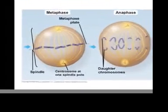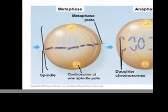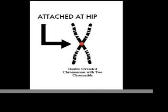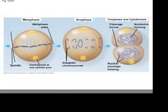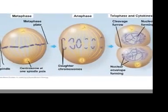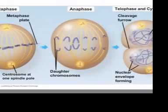Chromatids now align at the equatorial plate — they're just the chromosomes attached at the hip, so don't hate. The spindle fibers are there to hold them steady. Anaphase is next, and I think we're ready.